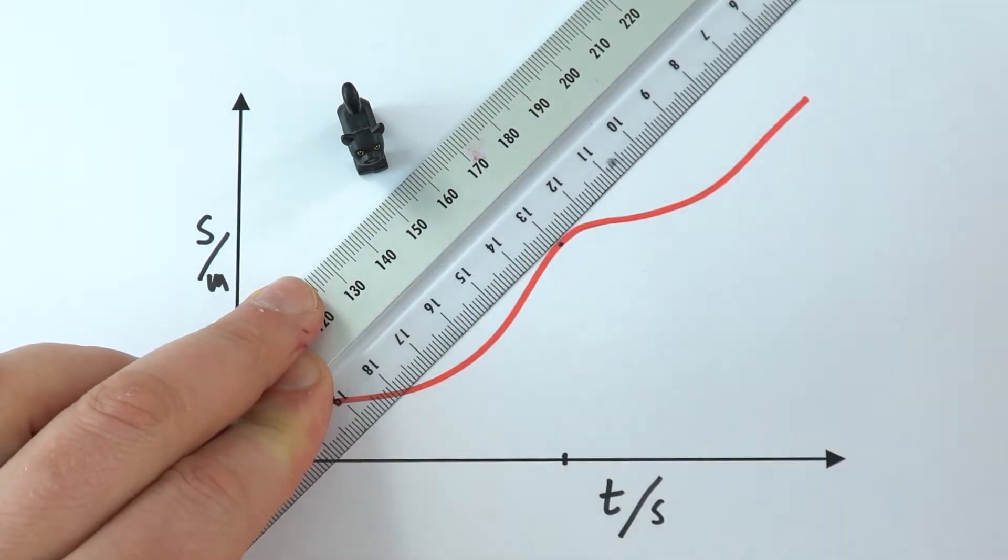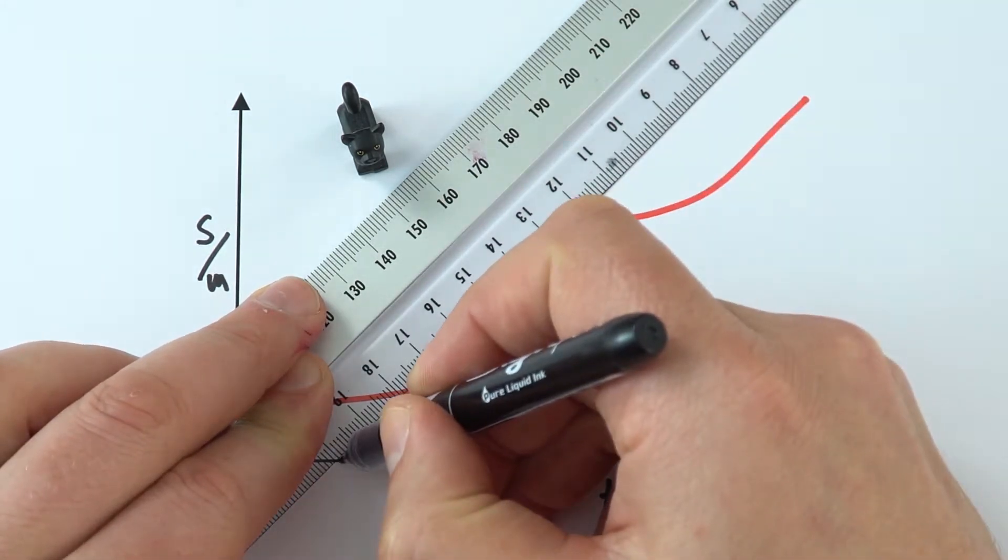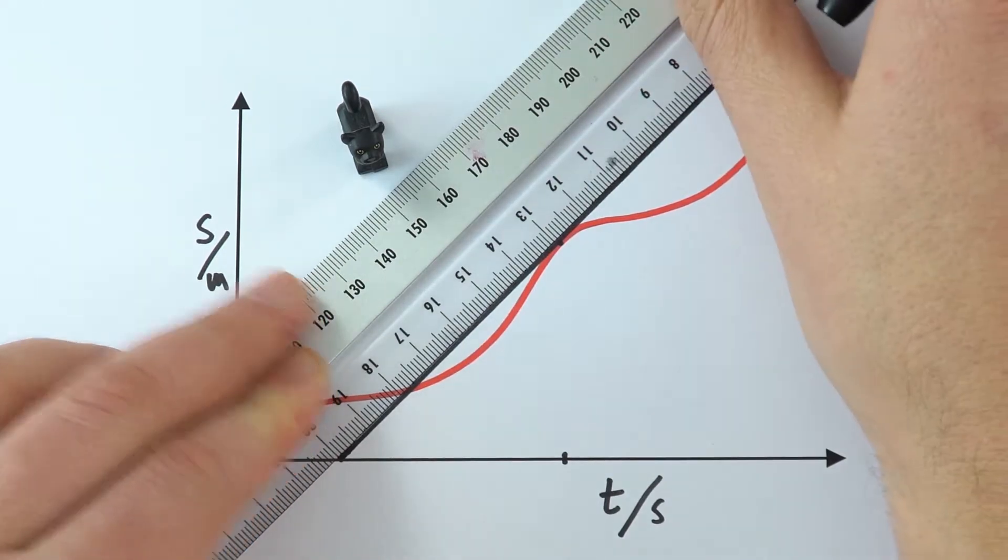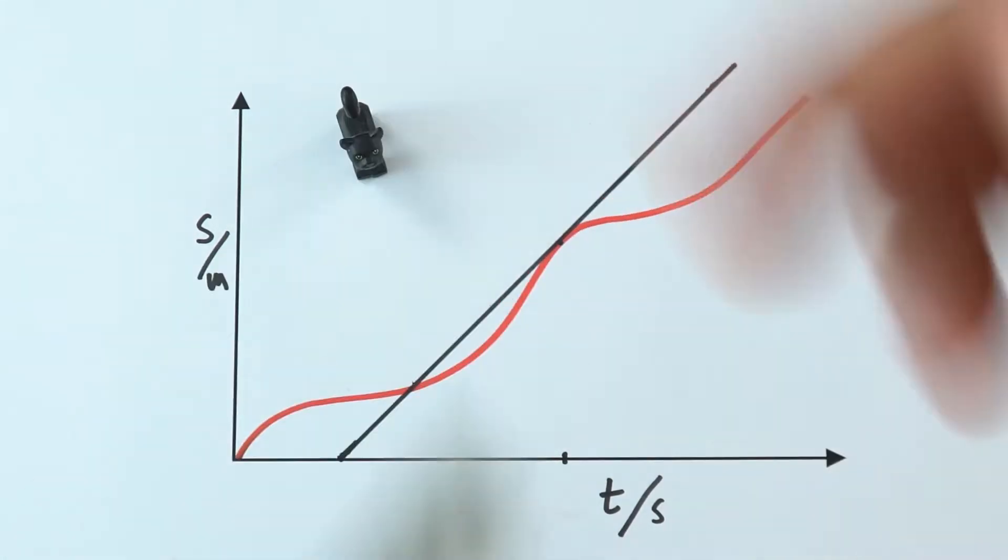Once I've got the line, I probably should be using a pencil if I'm drawing a graph. But I'm just going to use the pen for this video. And I'm going to draw a nice long tangent to that part of the graph.